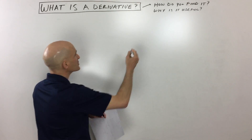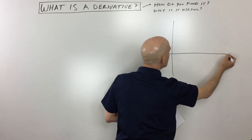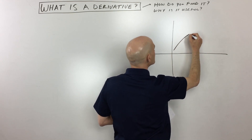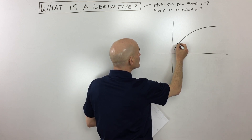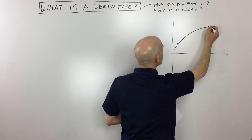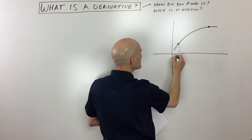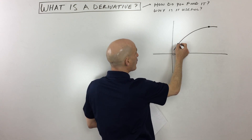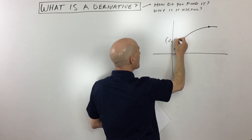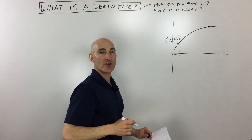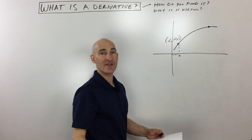Let me draw a diagram here. Basically what we have is something that looks like a curve, and we have two points on the curve — right here and right here. If we go down to the x-axis, this distance is x. And if we go up to our function, this point here is going to be x comma f of x. So when you put that x value into your function, you get out the y value, or the f of x value.